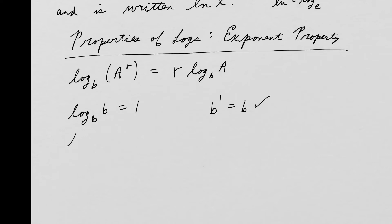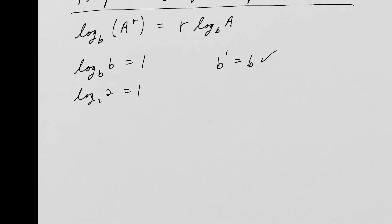Another important property: log base b of b equals 1. This comes directly from writing it in exponential form — b raised to the 1 equals b, which is true. So log base 2 of 2 equals 1, and natural log of e equals 1. These come up a lot.